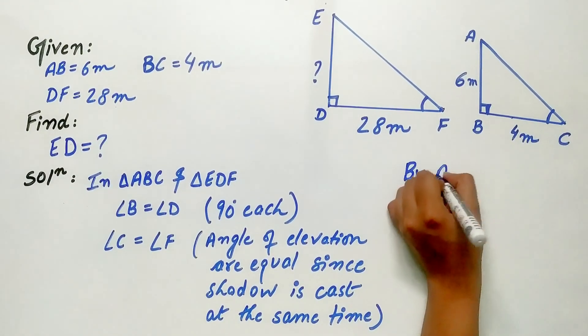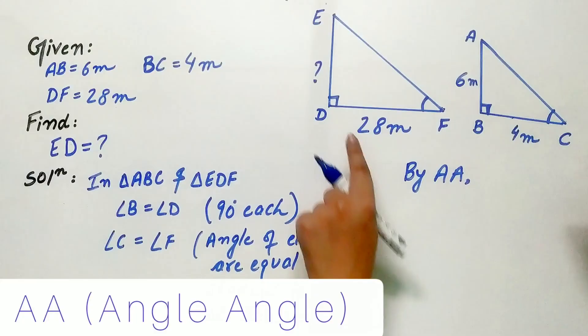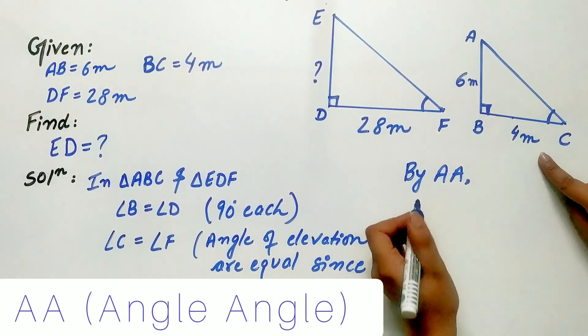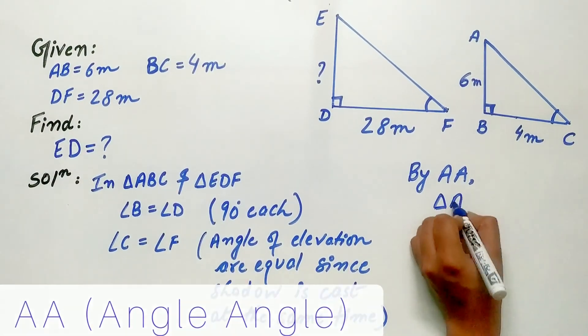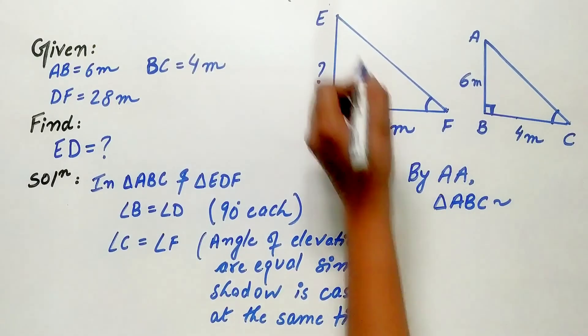By AA that is angle angle, both the triangles are similar. Triangle ABC is similar to triangle EDF.